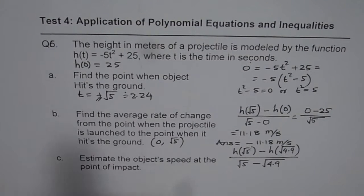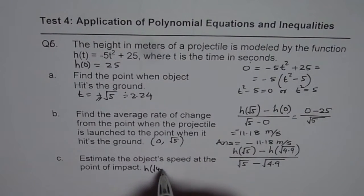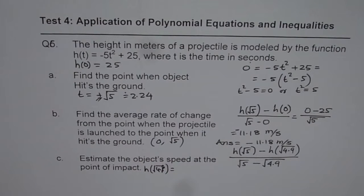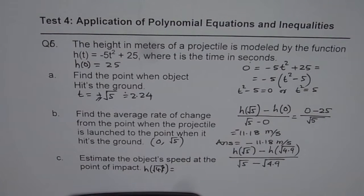So if I substitute 4.9 here, what do I get. So let me write down h(√4.9) is how much. So 4.9 times -5, so what we will do here is we will do 25 - 4.9 × 5, that gives me 0.5.